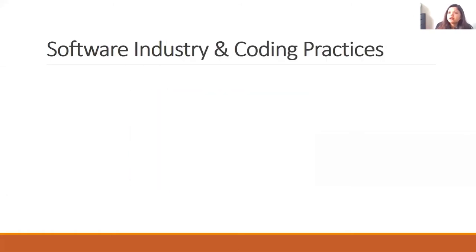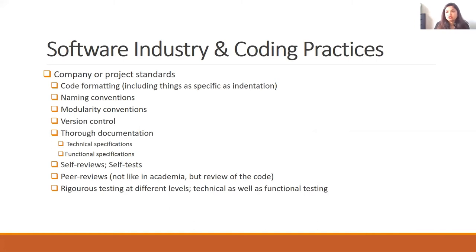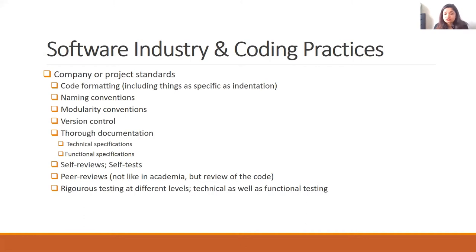In the software industry, coding practices depend on the company or the standards of the particular project you're working on. That includes how the code is formatted, specific kinds of indentation — different companies and different projects have different requirements with regards to even indentation, when it takes place and when it doesn't — as well as naming conventions, modularity conventions, what gets converted into a function or an object. In terms of version control, people are varied in their approaches, documentation thoroughness, self-reviews, self-tests, peer reviews, and rigorous testing at different levels.